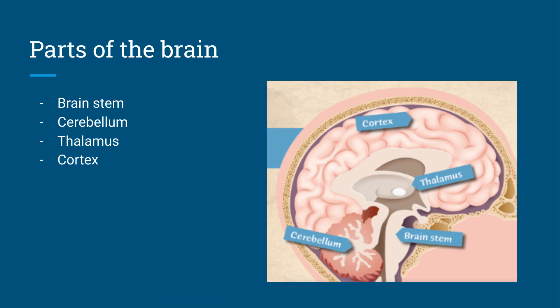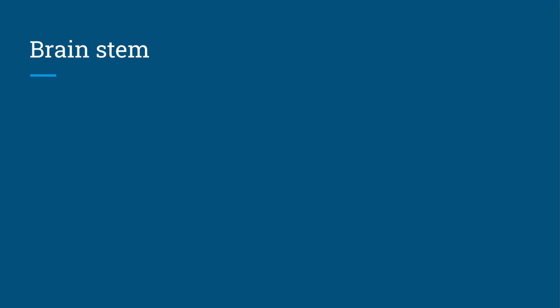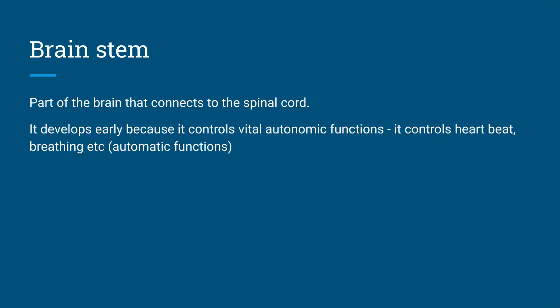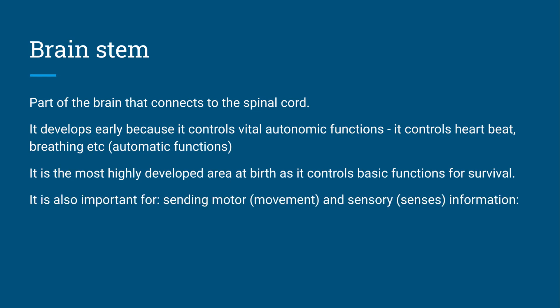Now there's different parts of the brain named on your specification: the brainstem, cerebellum, the thalamus, and the cortex. The first one we're going to look at is your brainstem. This is the part of the brain that connects with your spinal cord. It starts to develop early because it's vital for what we call autonomic functions—all the things like your heartbeat, your breathing, digestion, all those things you don't need to think about, those automatic functions. So it's also the most highly developed at birth because it's in charge of all those things we need for survival. It's also important for sending motor or movement messages or sensory information from the brain to our body, but also from our body to our brain. So it acts like that communicator between the brain and body.